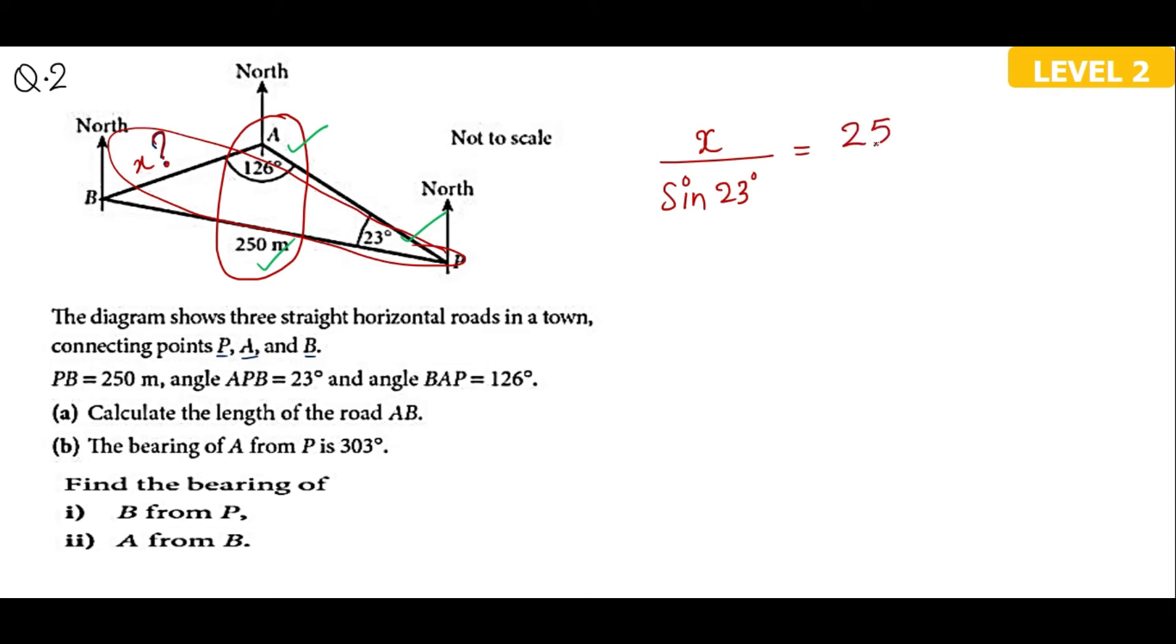So I will start with the sine rule. I will say the side X over sine of angle 23 is equal to 250 over the sine of the angle which is 126. Cross multiplying, I get X equals 250 times sine 23 over sine 126. So using my calculator, I get the answer 120.742. This is what I get from the calculator. I will be rounding my answer to three significant figures, which is 121 meters.